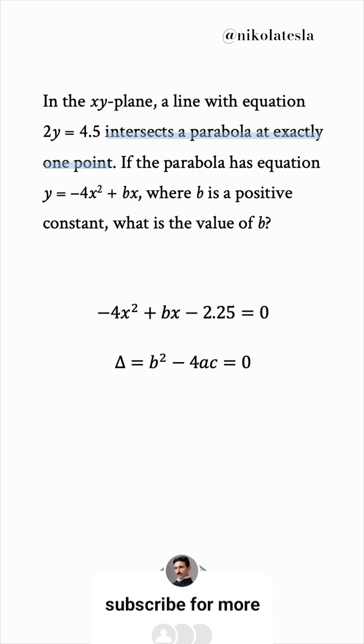b in our case is the unknown b, so plugging in a, negative 4, and c, negative 2.25, we get b squared minus 36 equals 0. So b squared must be 36.